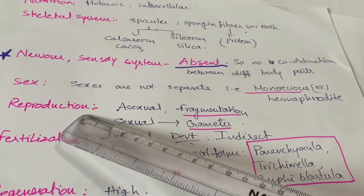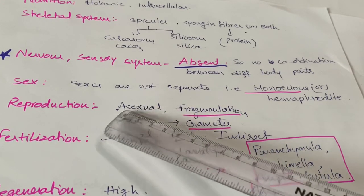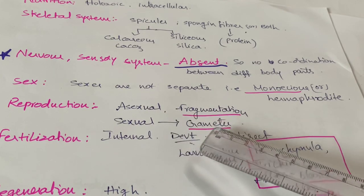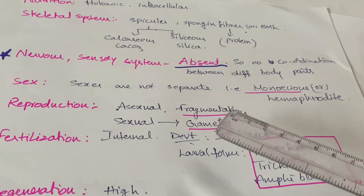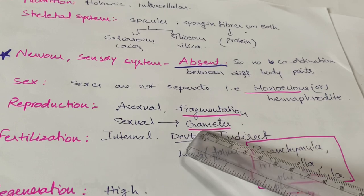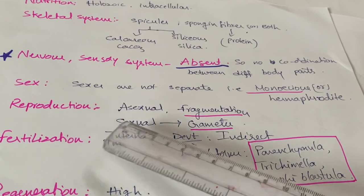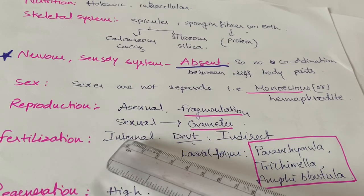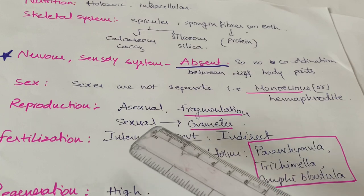Reproduction is of two types: asexual reproduction and sexual reproduction. Asexual reproduction occurs by fragmentation, and sexual reproduction occurs by the formation of eggs and sperms and the fusion of these gametes. If sexual reproduction occurs, fertilization is inside the body of the animal — that is, internal fertilization. The cleavage is holoblastic.